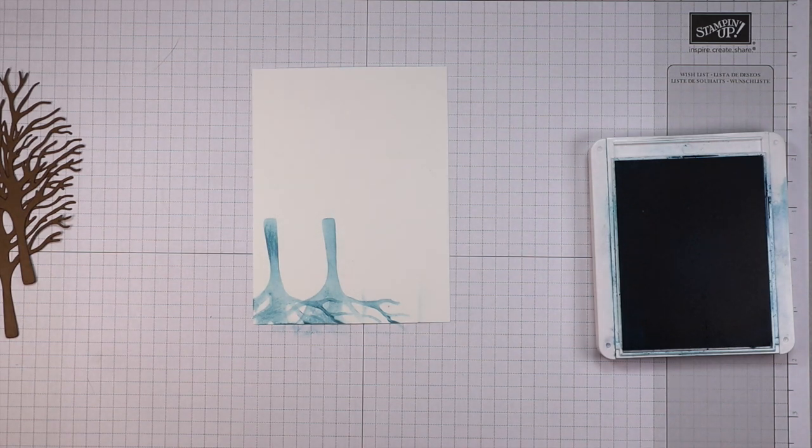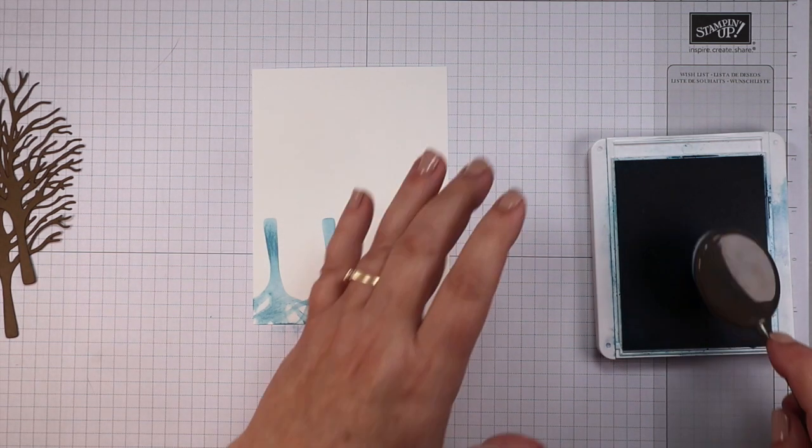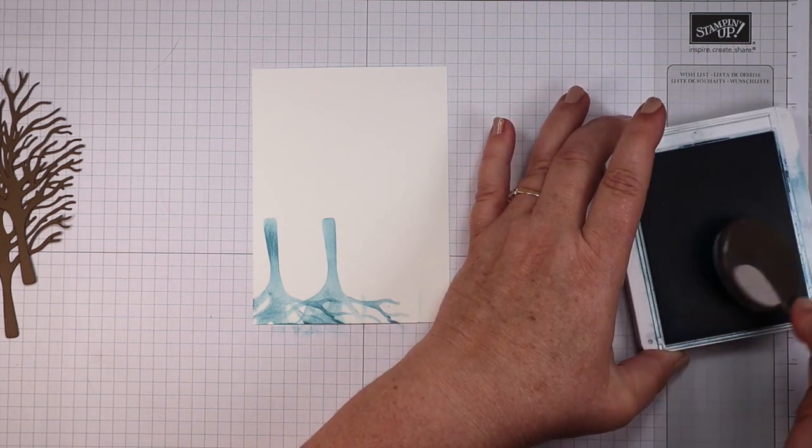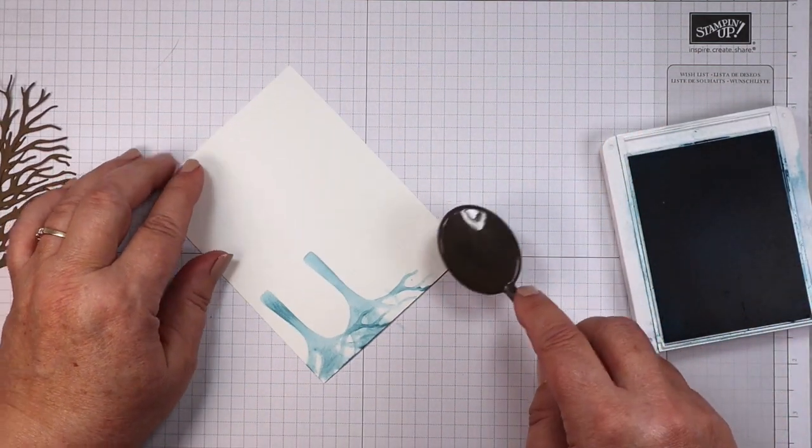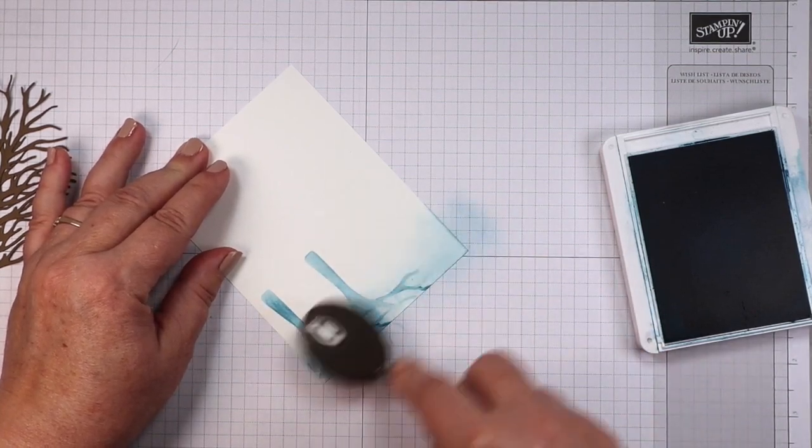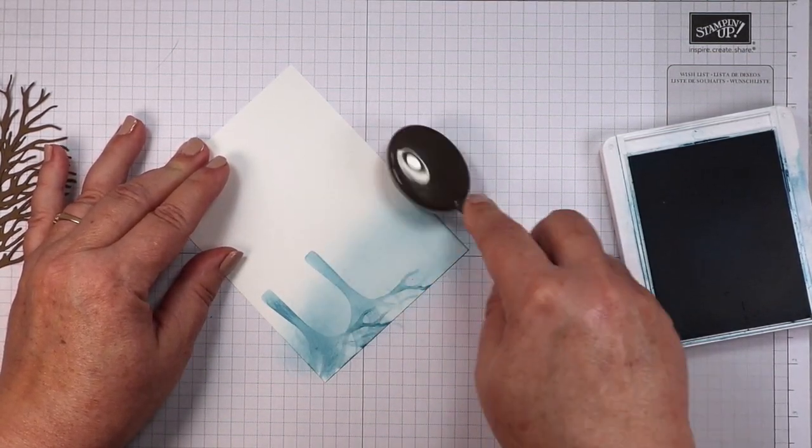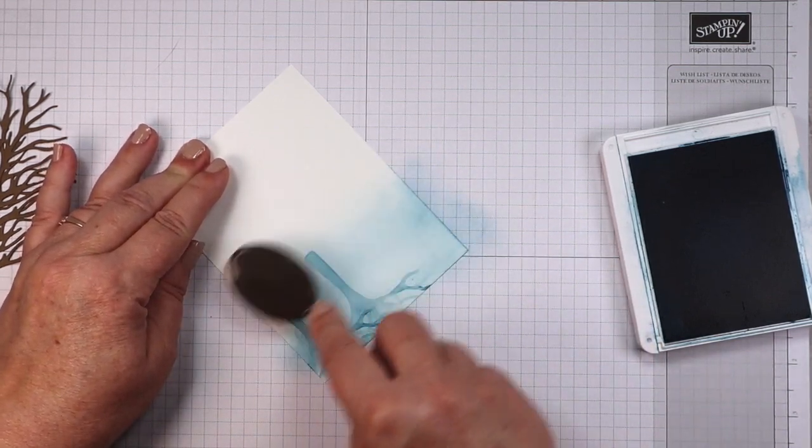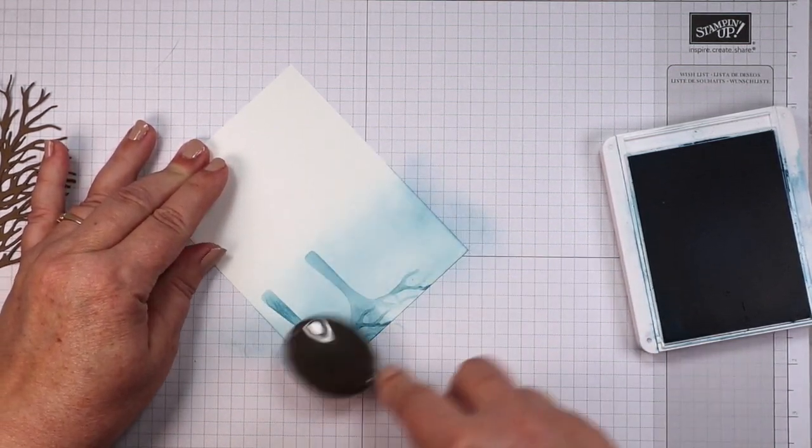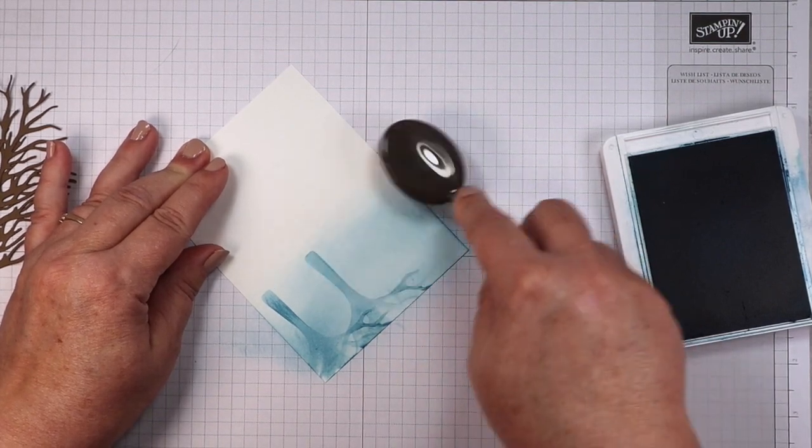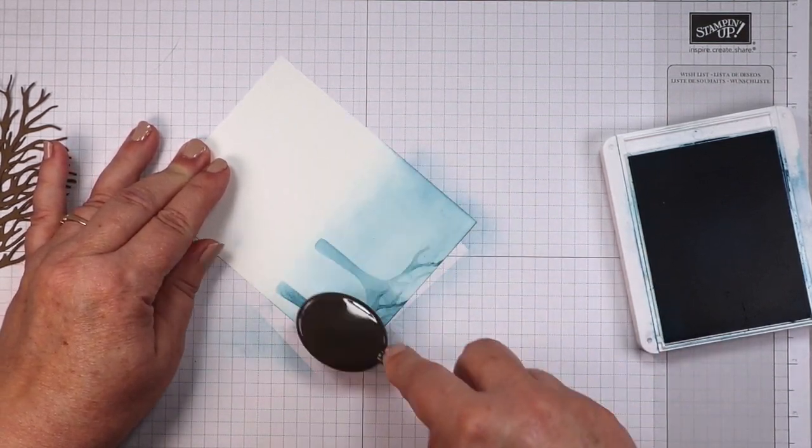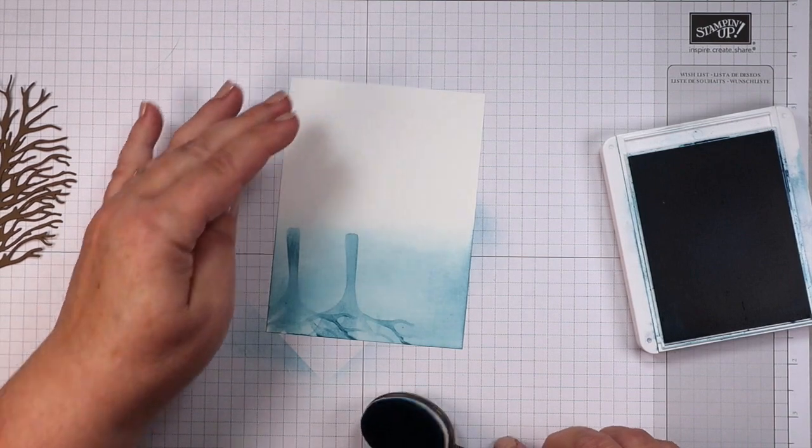All right, so there's our reflection and now we're going to put in our water. We're going to just go over this lightly here. You don't want to be as strong as what you put in your tree reflection of course, else it won't show up well. Again, we're staying with our balmy blue.